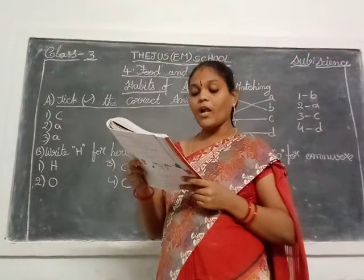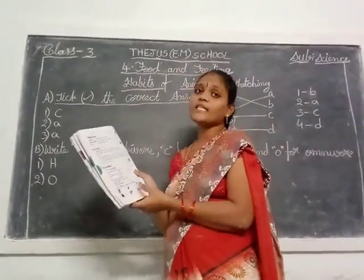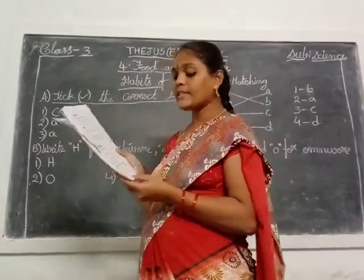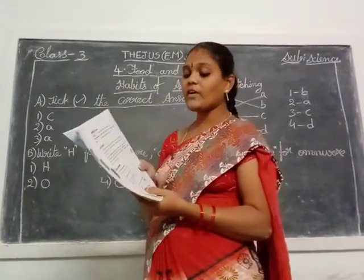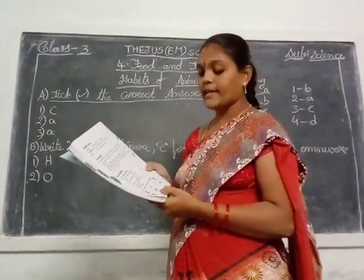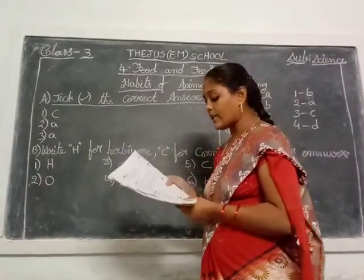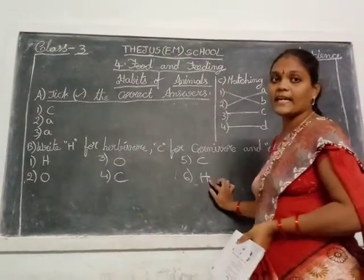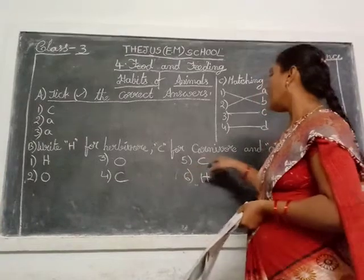Write H for herbivore, C for carnivore, and O for omnivore. Given pictures — first one is cow, so that is herbivore. Second one is omnivore — eats flesh of animals and grass also. Next, crow — crow is also omnivore, eats flesh of other animals and seeds. Next, snake — snake is carnivore, only eats flesh of animals. Next, dog — dog is also carnivore, only eats flesh of other animals. Next, herbivore — only eats grain and seeds. So: first cow is herbivore, second omnivore, third omnivore, fourth carnivore, fifth carnivore, sixth herbivore.